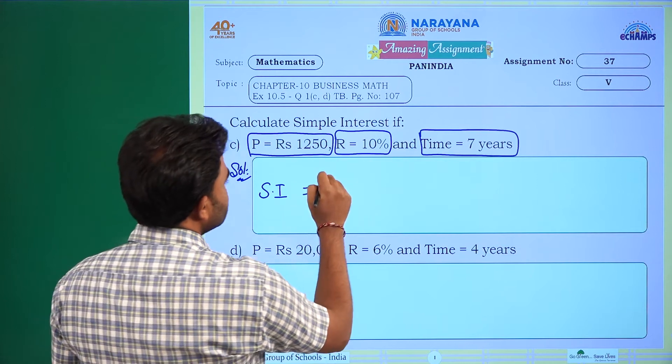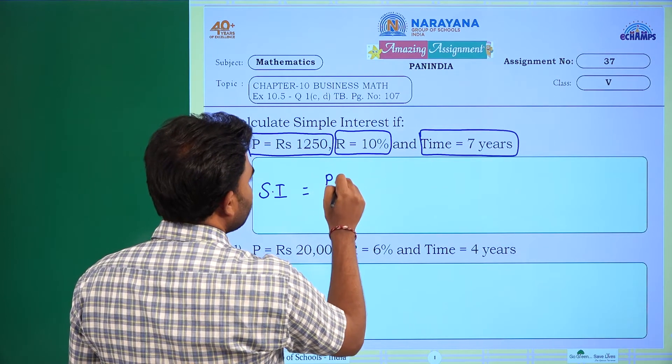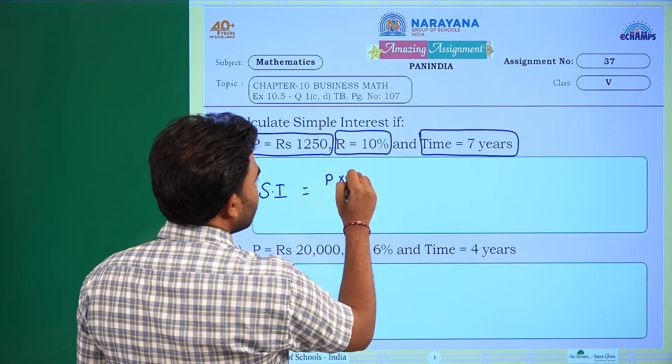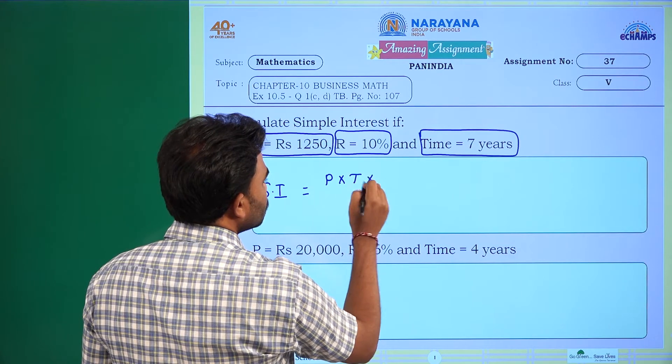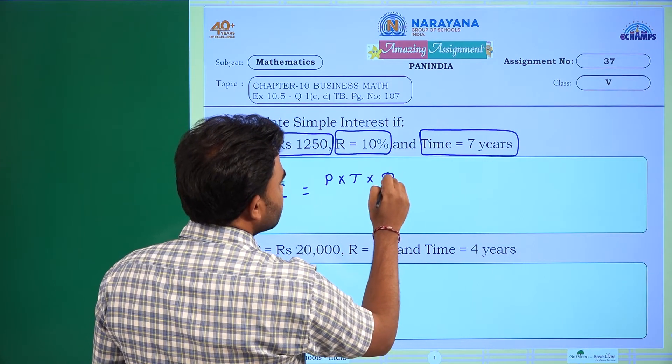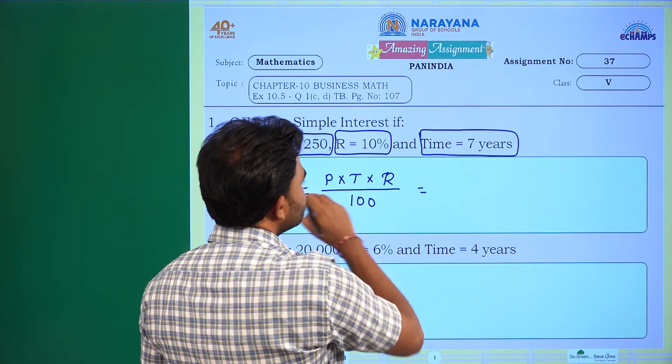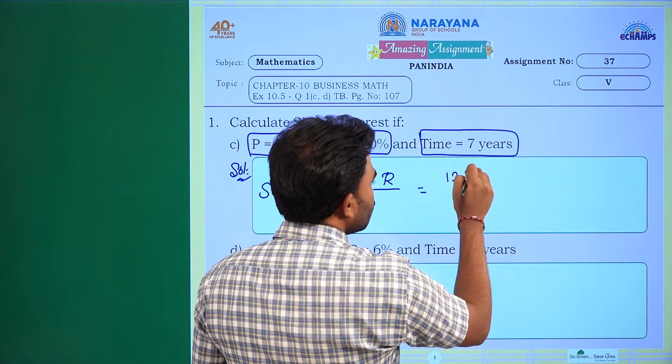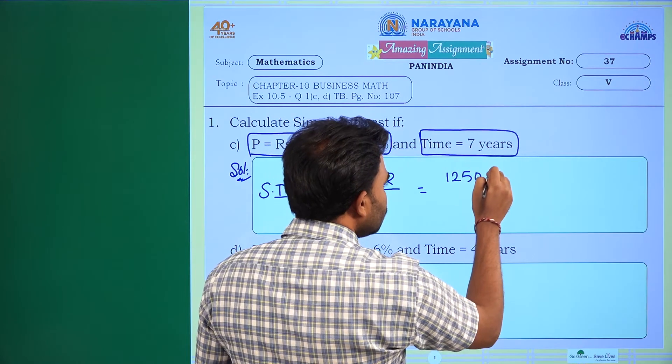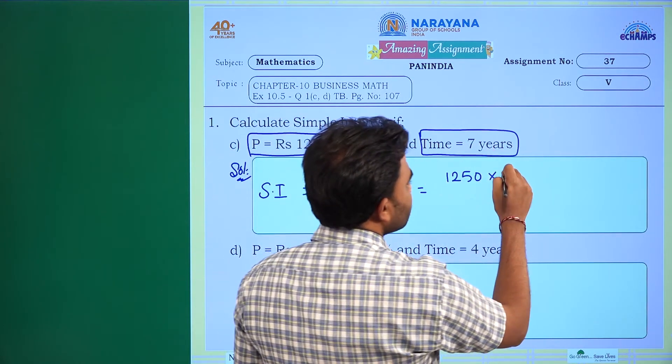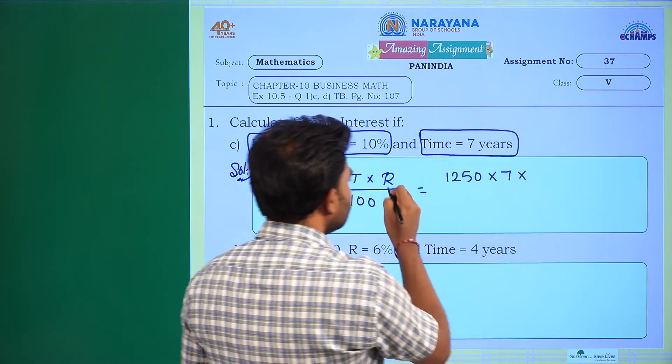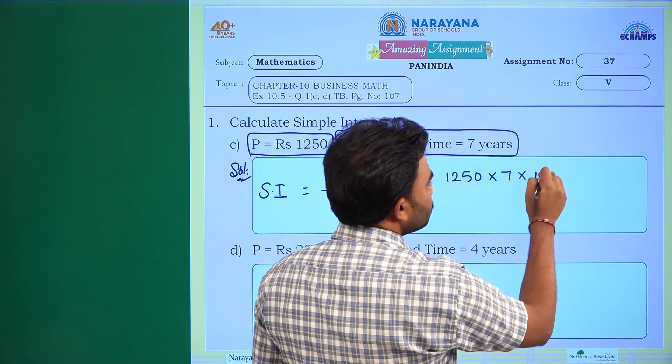So simple interest is equal to principal P into time T into R rate of interest by 100. It equals what is the principle here: 1250 into time is 7 years into rate of interest is 10%, that means 10 by 100.